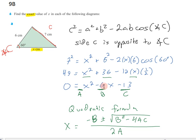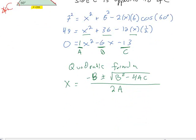So c is negative 13, b is negative 6, and a is 1. Those are the numbers that we're going to plug into our quadratic formula.